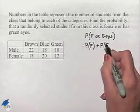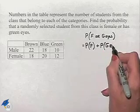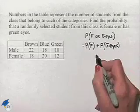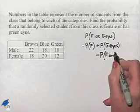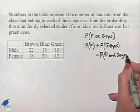Minus the probability that we select a female who has green eyes.